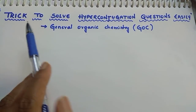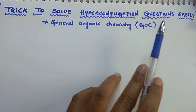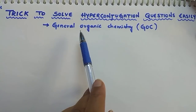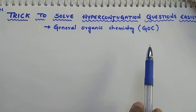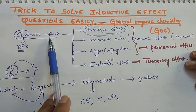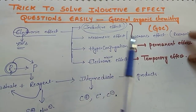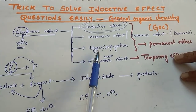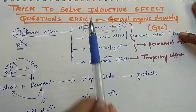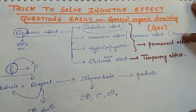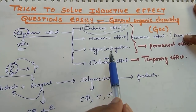In today's session, I am going to discuss a trick to solve hyperconjugation questions easily. This topic is from general organic chemistry (GOC). Electronic effects are of four types: inductive effect, mesomeric effect or resonance effect, hyperconjugation, and electromeric effect. I already uploaded videos on inductive effect and mesomeric/resonance — today I am going to discuss hyperconjugation.